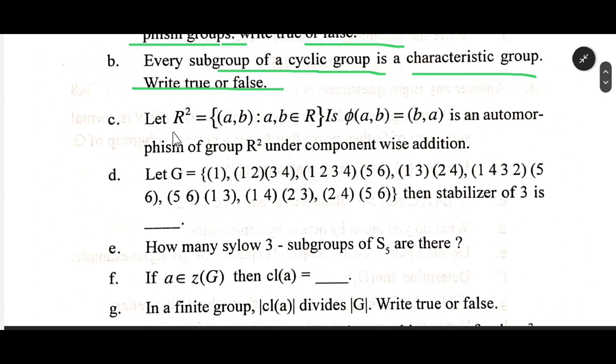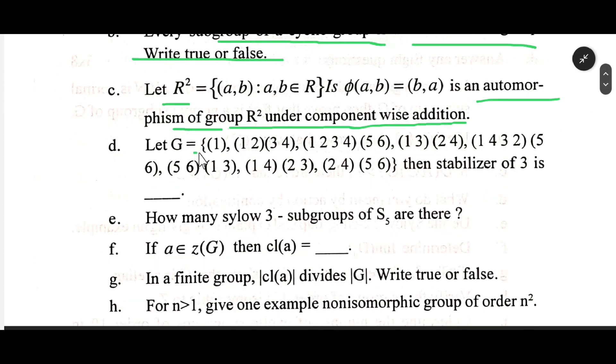Let R² = {(a,b) : a,b ∈ R} is φ(a,b) = (b,a) is an automorphism of group R² under component-wise addition.